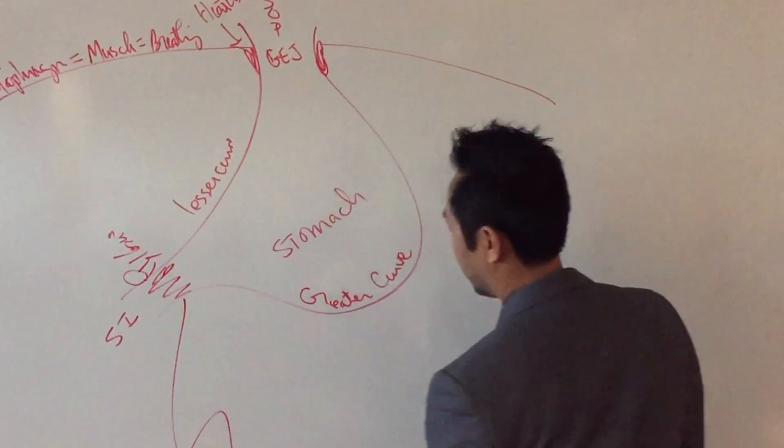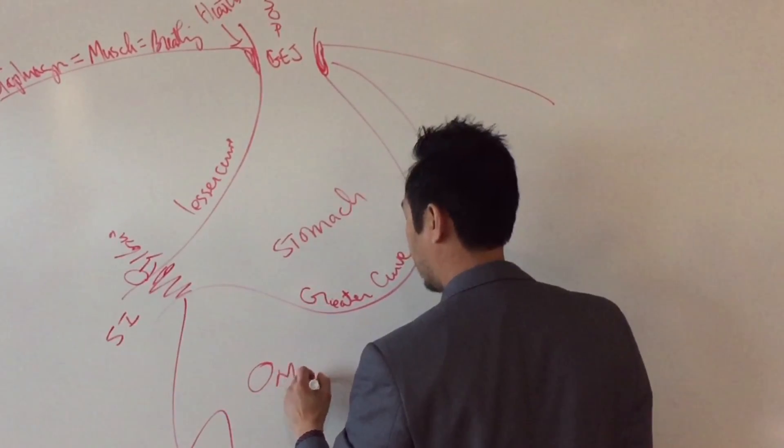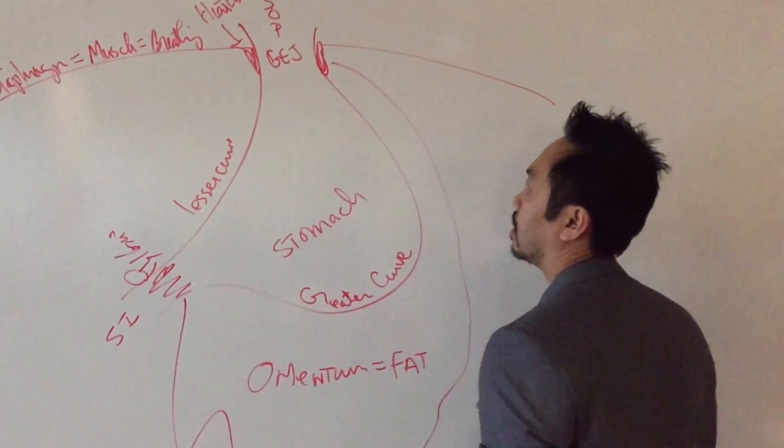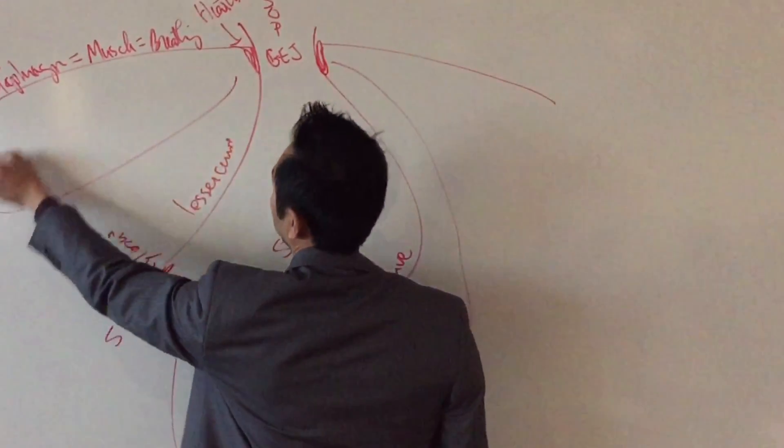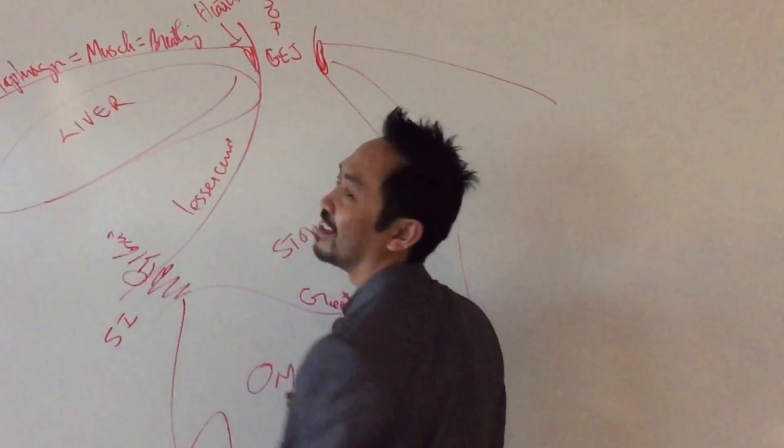All right. There's a big layer of fat down here. It's called the omentum. And it is fat. Right? There's a big purple organ up here called the liver. Liver.